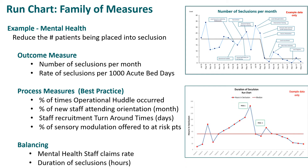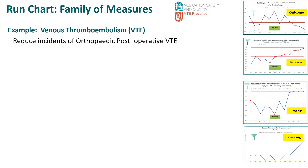Here's a run chart looking at that balancing measure of the duration of seclusion over time. In this next example of the family of measures, we're going to look at how a surgical team managed their venous thromboembolism or VTE rate. The project was around reducing the incidence of orthopaedic postoperative venous thromboembolism or VTE.